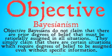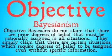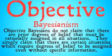Objective Bayesians don't claim that there are prior degrees of belief that must be rationally assigned in all situations. They simply claim that there are certain situations which require degrees of belief to be assigned even without specific information.